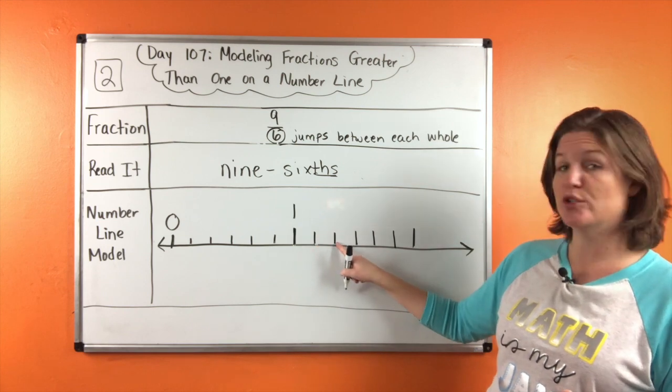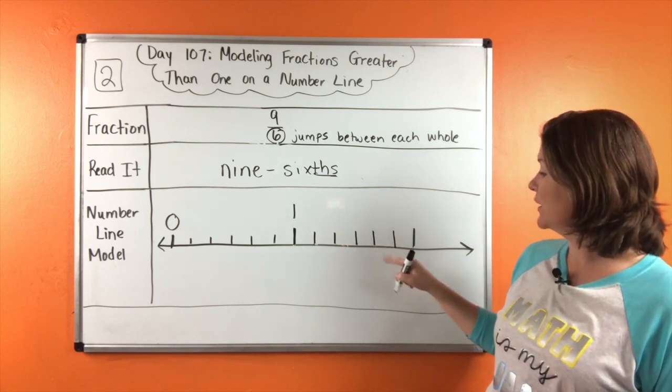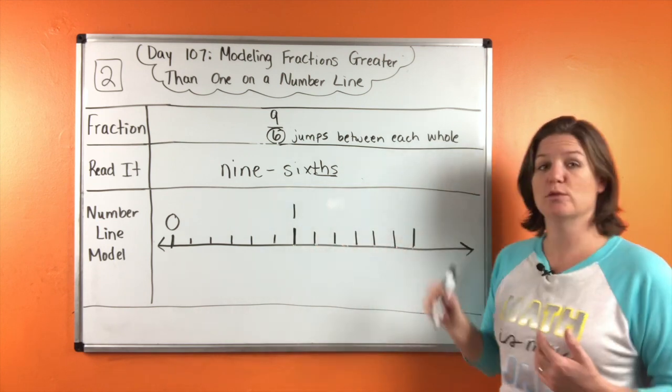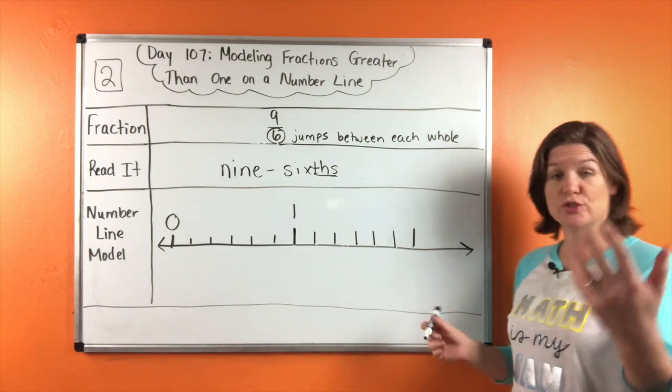And again, I'm going to start right here. We don't count until we make that jump. And jump one, two, three, four, five, six. This would be the whole number two.